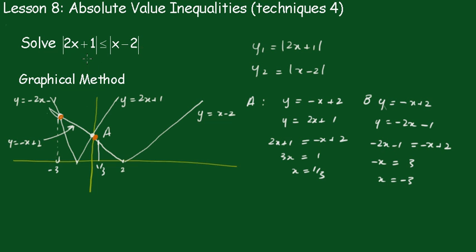Now this one here is y1 and this is y2. So y1 has to be less than y2 — the y values must be less than y2. In this region, the y values are less, underneath this one. So the solution is that x must lie between minus 3, inclusive, and one third.